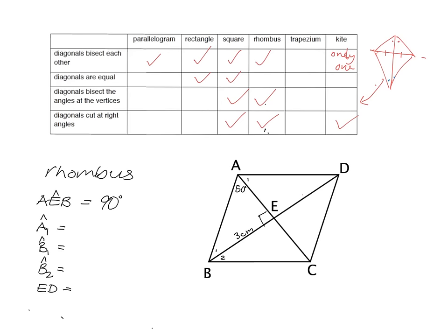What about A1? A1 refers to this little part of the picture here, this angle. We know we're in a rhombus, so the diagonals bisect the angles at the vertices — these two things are equal — so very easily A1 is 50. What about B1? We're in this little triangle, so these things must all add up to 180. 50 plus 90 plus B1 must equal 180, so B1 must be 40.